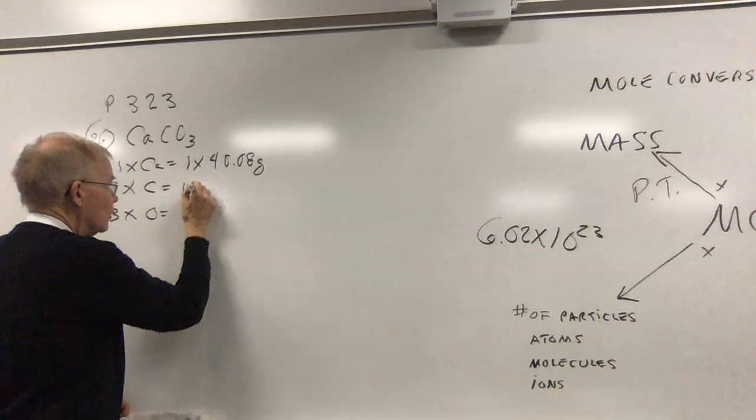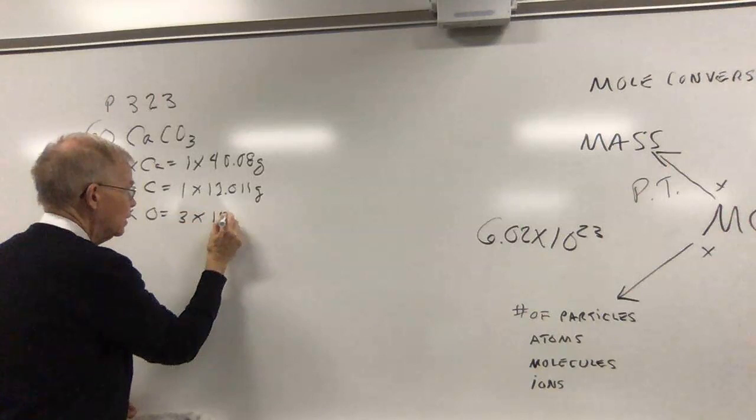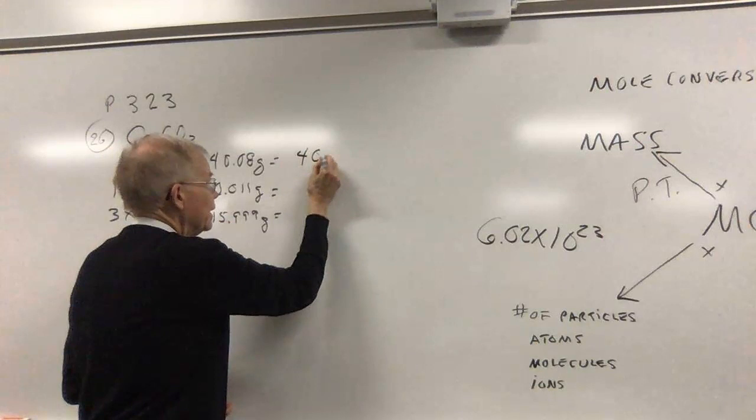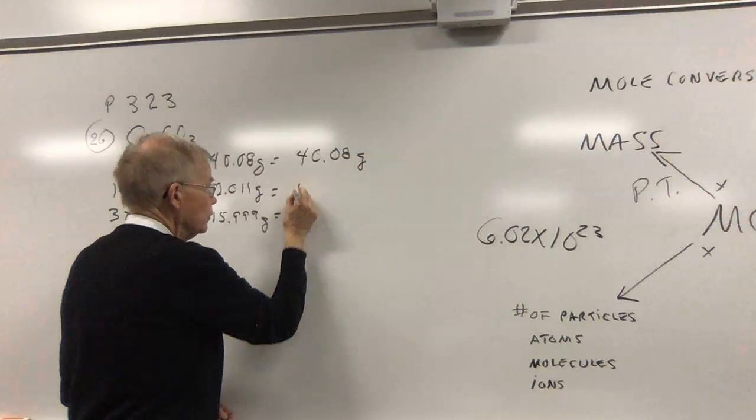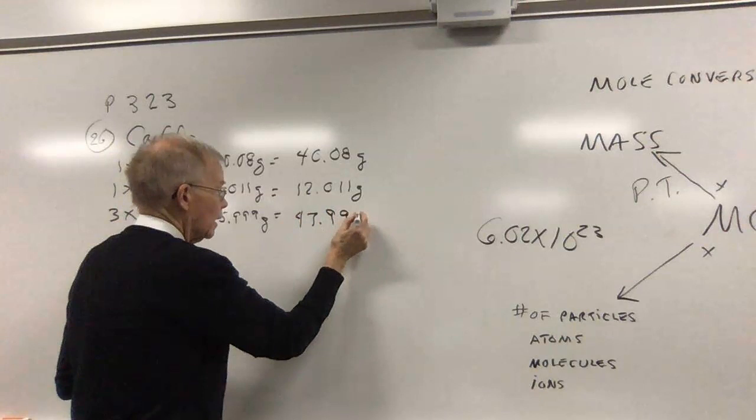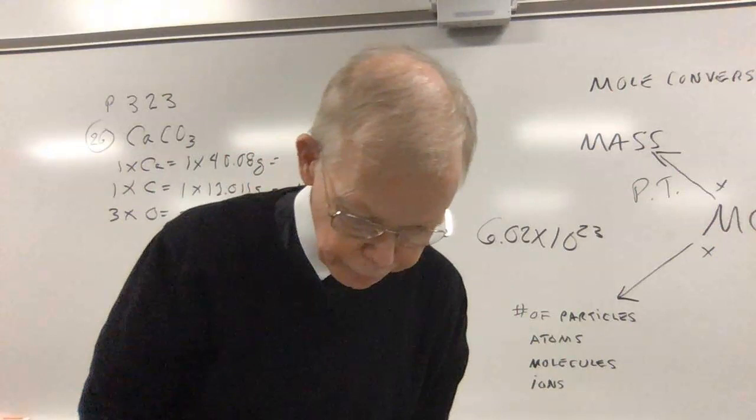So 1 times calcium would be 1 times 40.08 grams, carbon 1 times 12.011 grams, and oxygen 3 times 15.999 grams. So my calcium, 40.08 grams, the carbon, 12.011, and when I multiply 3 times 15.999, I get 47.997 grams. I'll add these up. I got 100.088 grams.